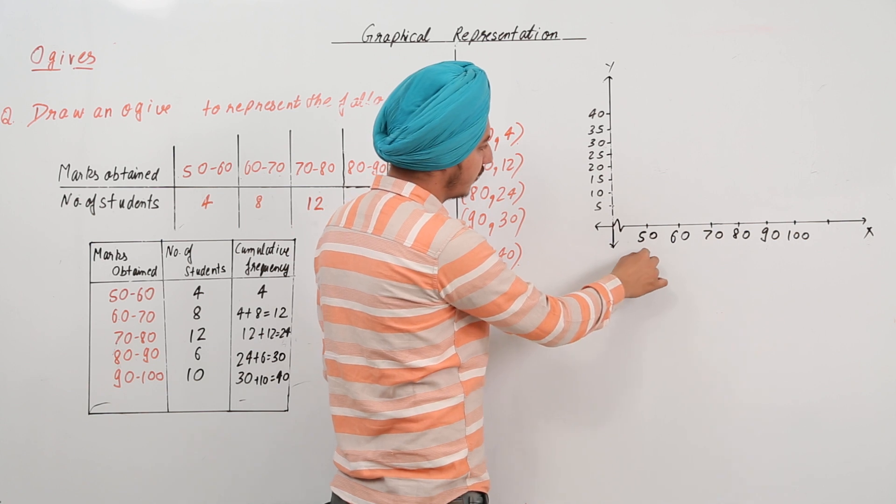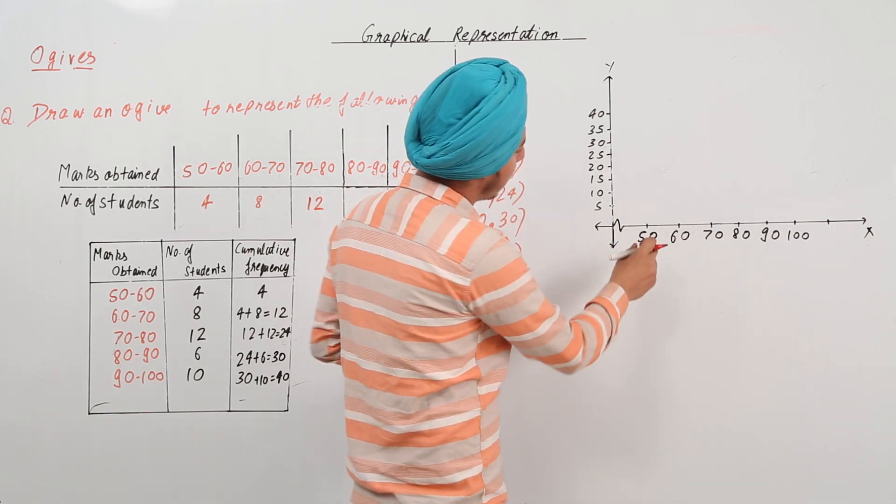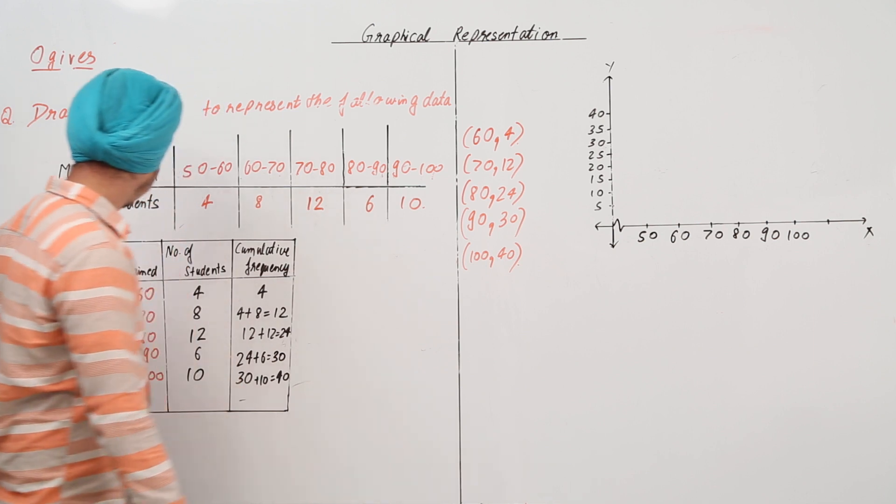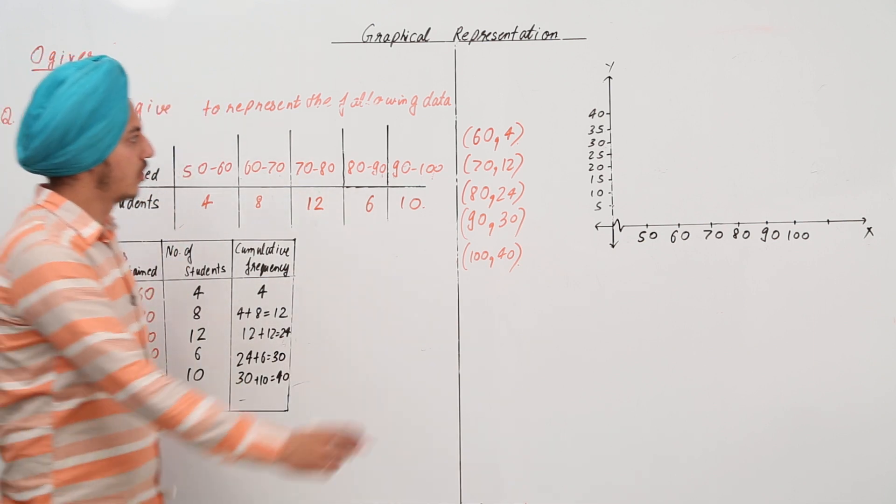And on 50, we have the frequency 0. That is also necessary. On 50, for 60 we have the frequency 4 but for 50 we take the frequency equal to 0.